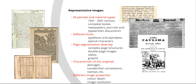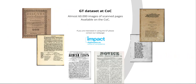These issues include different fonts, page structure, characteristics of each original, and the different properties of the digital image. On the Center of Competence webpage, digitization.eu, this collection will be available. It will contain almost 60,000 images.